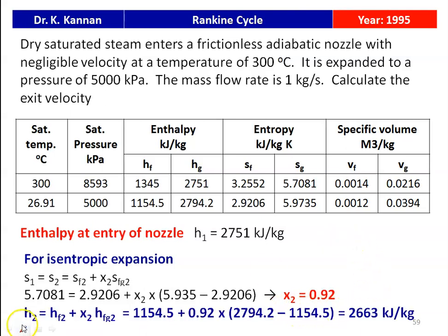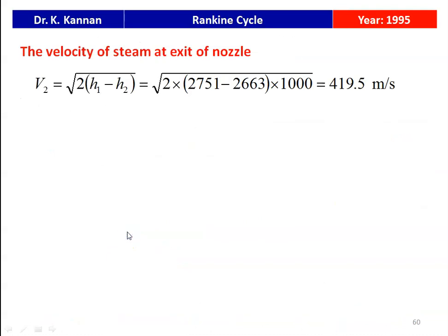The exit enthalpy: H2 = HF2 + X2·HFG2 = 1154.5 + 0.92·(2794.2 - 1154.5) = 2663 kJ/kg. The exit velocity: V2 = √(2·(H1 - H2)) = √(2·(2751 - 2663)·1000) = 419.5 m/s. So the velocity of steam at the exit of the nozzle is 419.5 m/s.